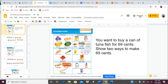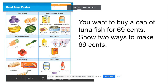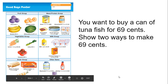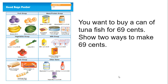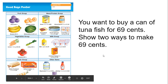So what we're going to do is I'm going to show you this grocery poster that we're going to be using. On this poster we have lots of different items — fruits, vegetables, meats and proteins, milks, grains, and other items. We're going to do two of them together. I'm going to switch back and forth between looking at the poster and looking at coins, and we're going to find two different ways to make the same amount of money. We'll do two together, then I'll ask you to do two on your own.